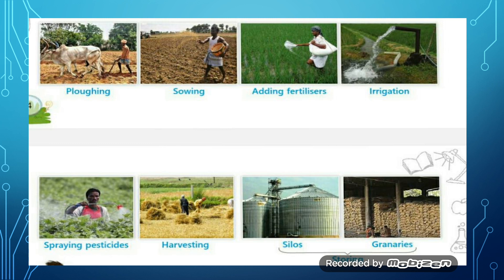Next stage is harvesting. Once the crop is ready, it is harvested. The crops are harvested when they are ripe and ready to be consumed — ready to eat and used by the people. When your crop is ready to be cut, you can cut it and separate the fruits or vegetables from the crop plants.